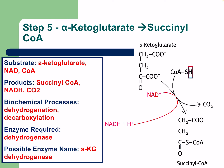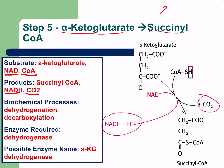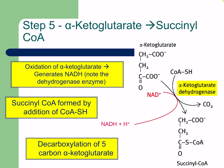Step five: alpha-ketoglutarate to succinyl-CoA. We need NAD+ and coenzyme A, and the products are succinyl-CoA, NADH, and CO2. Another NADH is produced and another CO2 is removed — remember there are two CO2s removed in the citric acid cycle. The enzyme is alpha-ketoglutarate dehydrogenase. Succinyl-CoA is formed by addition of coenzyme A, and decarboxylation of the five-carbon alpha-ketoglutarate takes us from five carbons to four carbons.